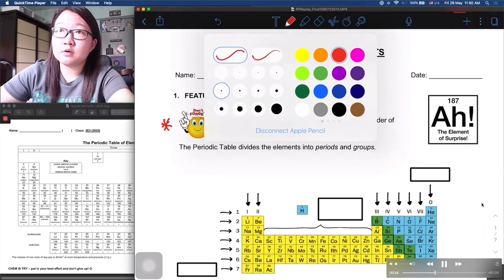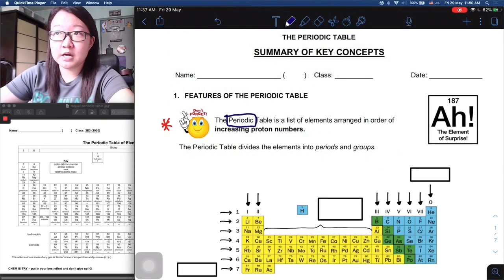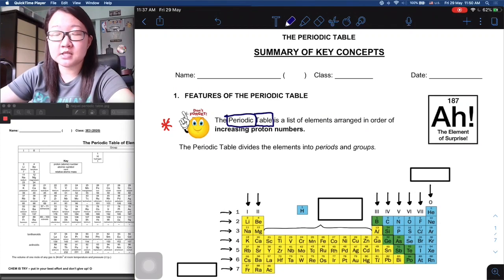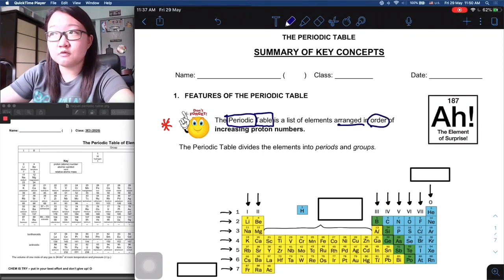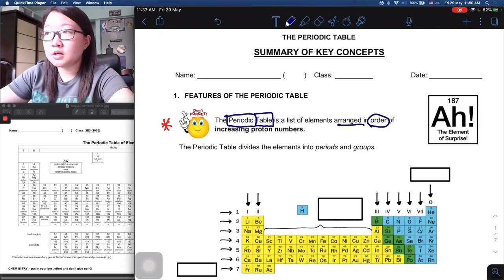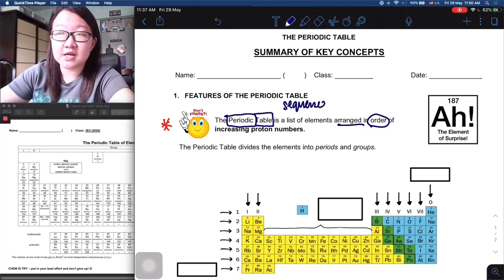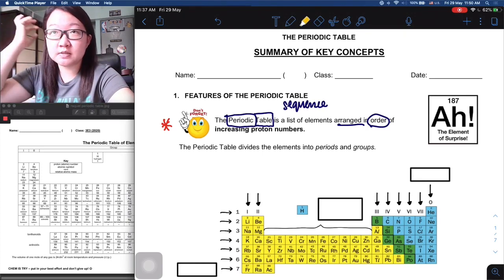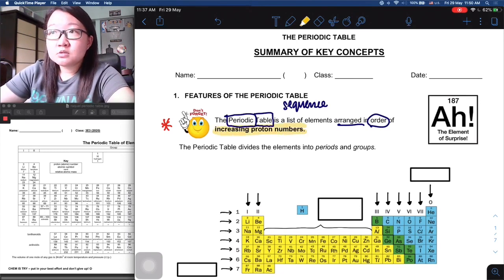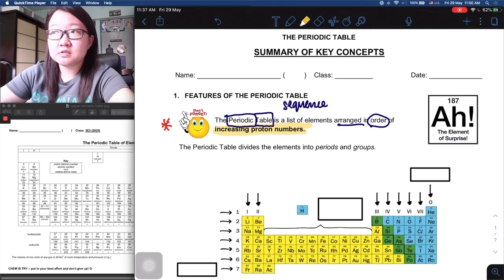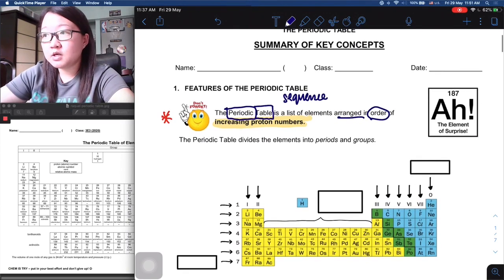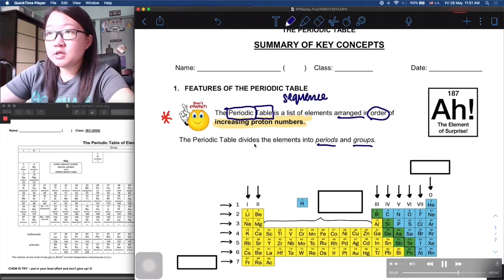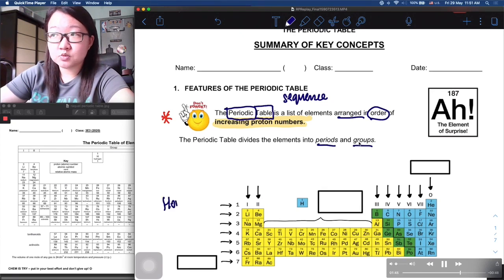Periodic table - if you break the terminology up into two, it's periodic as well as table. From the name, periodic meaning there is a certain trend, certain arrangement, certain order to it. As for table, there are always rows and columns, suggesting some form of a sequence. To put all these together, basically the periodic table is a list of elements arranged in order of increasing proton numbers. The periodic table also further divides the elements into periods as well as groups.